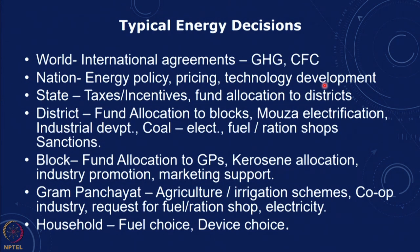Technology development — what kinds of policies do we have to support and encourage it? At the state level there are taxes and incentives, some of which have now been streamlined under the GST scheme. Electricity is still outside the GST. At the state level there is also fund allocation to different units and districts. At the district level, fund allocation goes to blocks, covering electrification of villages, some industrial development, ration shops, and sanction of quantities.